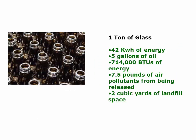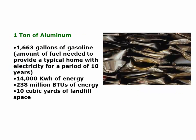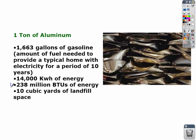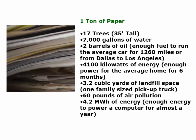Take a look at one ton of glass — we're only saving 714,000 BTUs of energy, much less than the other two materials. Then look at aluminum: one ton of aluminum can save 238 million BTUs of energy. That's some real savings. Lastly, with paper, you can save a lot — there are tremendous benefits from recycling paper.